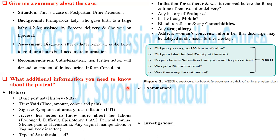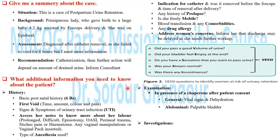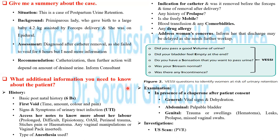From the examination — please be organized: general examination, abdominal examination, and pelvic examination. With a chaperone present and after patient consent, from the general examination you need the vital signs and assess for any possibility of dehydration. Abdominal examination for a palpable bladder, and vaginal or genital examination for any trauma or swellings like hematomas, any possibility of leaks, prolapse, or missed vaginal swabs. For investigation, do urine general and culture plus ultrasound scan to measure the amount of post-void residual urine.